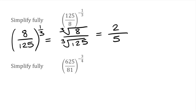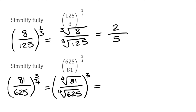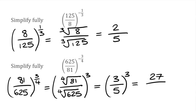Finally, we have 625 over 81 to the power of negative 3 quarters. Negative index means we're looking for the reciprocal, so we flip this to get 81 over 625 to the power of positive 3 over 4. The denominator shows the root and the numerator shows the power. We find the fourth root of the fraction: the fourth root of 81 over the fourth root of 625, and then cube whatever we get. The fourth root of 81 is 3, and the fourth root of 625 is 5, giving us 3 fifths, which we then raise to the power of 3. So 3 cubed is 27, and 5 cubed is 125. The final answer is 27 over 125.